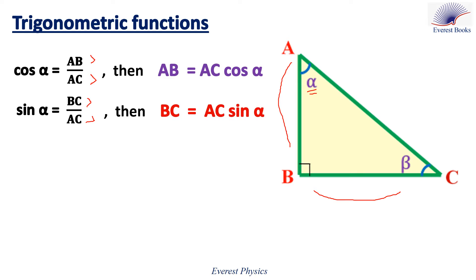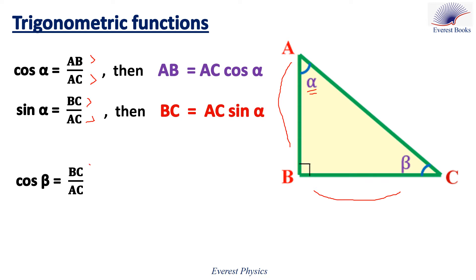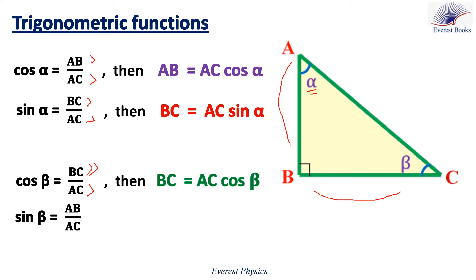Let's move to angle beta. Cosine beta equals BC, which is the adjacent side for angle beta, over AC, the hypotenuse side. Then BC equals AC cosine beta. Sine beta equals the opposite side to angle beta, which is AB, over the hypotenuse AC. Then AB equals AC sine beta.